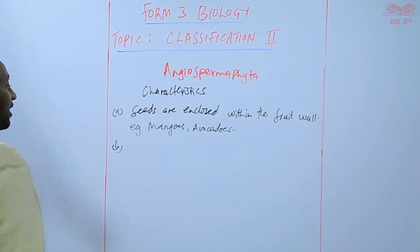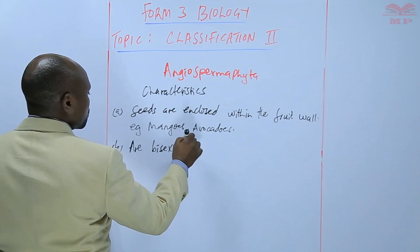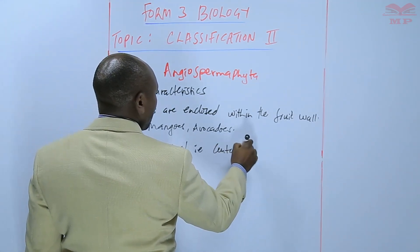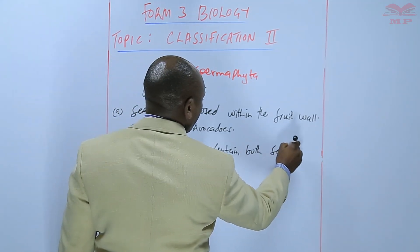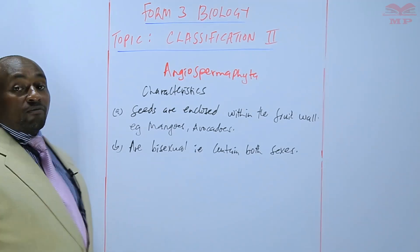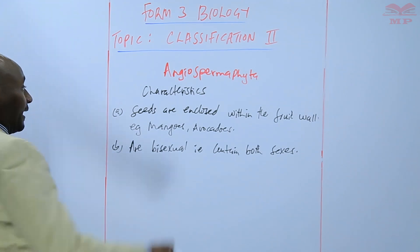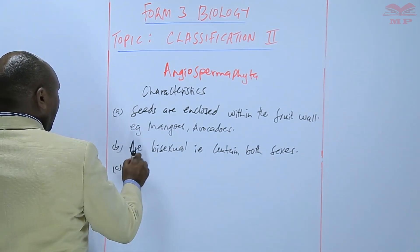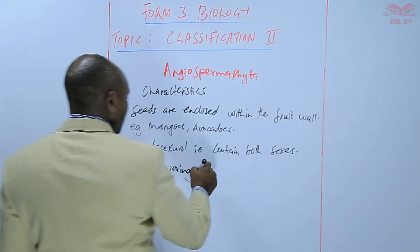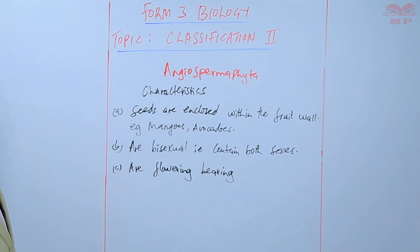Angiospermophyta — they are bisexual, meaning that they contain both sexes. We have both the male and the female parts of the plant within the same plant. They are flower-bearing — the so-called flowering plants.